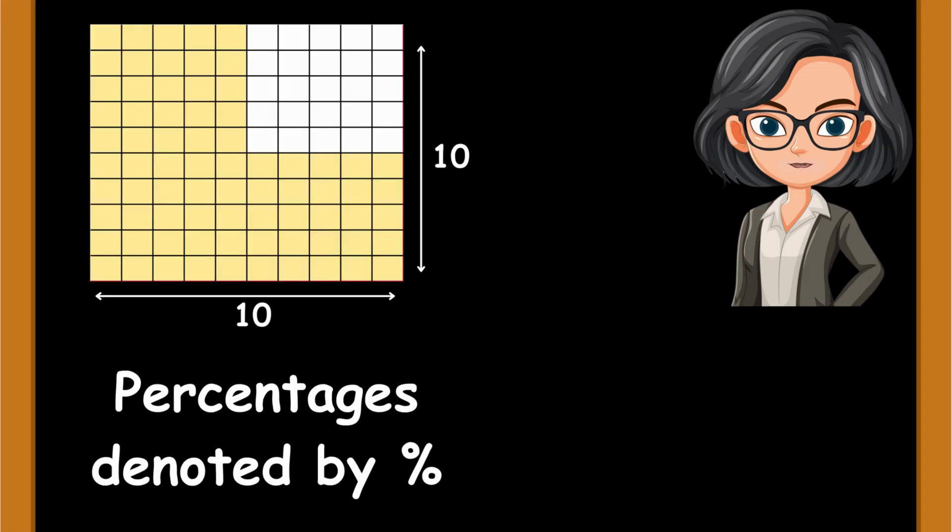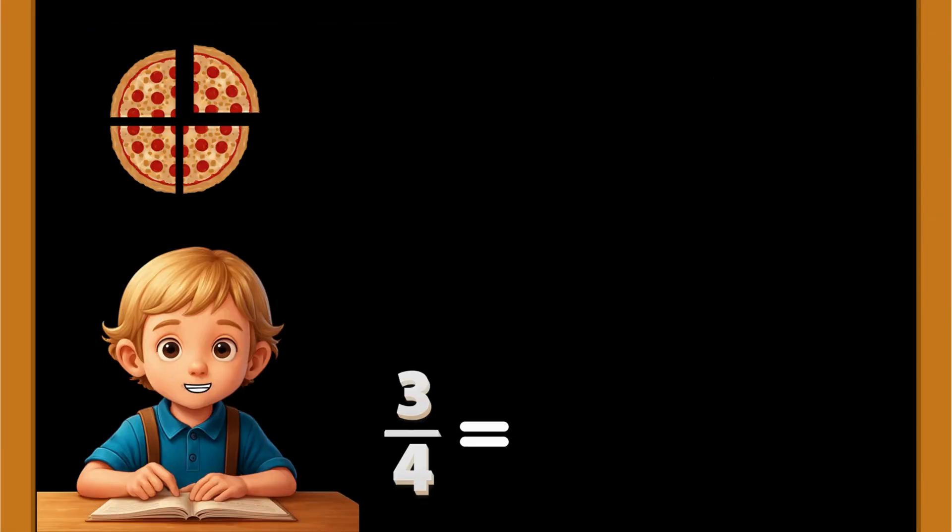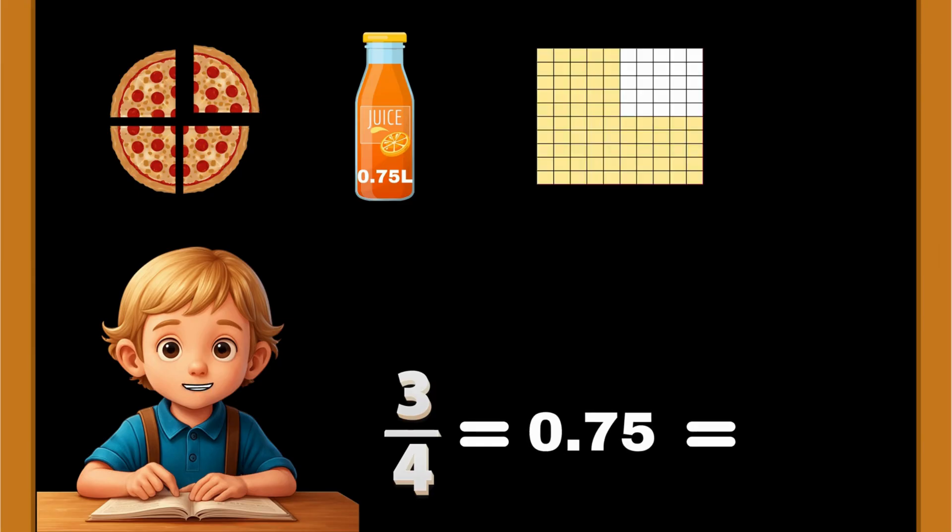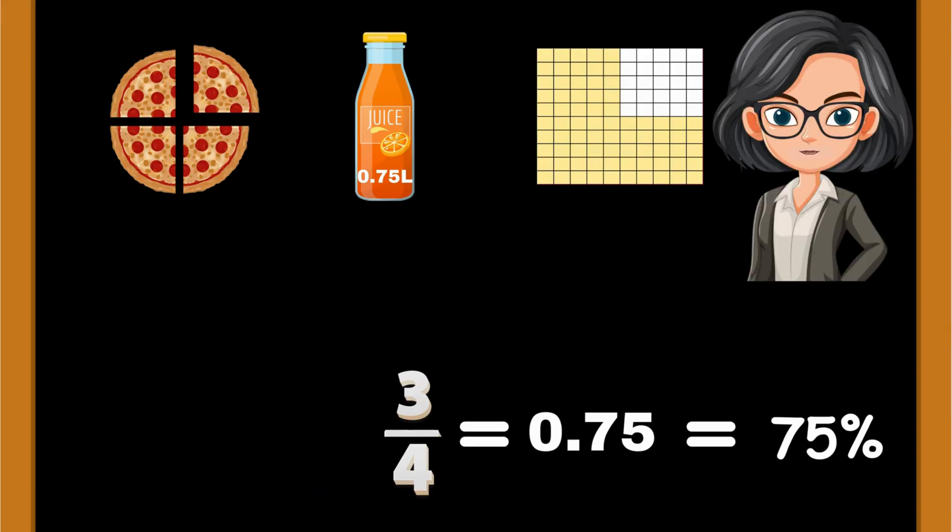And now, meet the third friend, percentages. Percent means out of 100. So three-quarters equals 0.75 equals 75 percent? You got it. They're all different ways to show the same part of something.